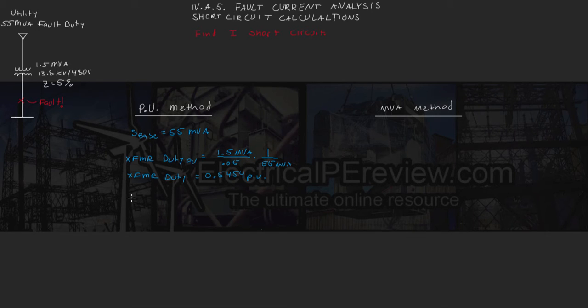Next, our utility duty is going to be equal to 1 per unit. Since we're taking our 55 MVA value and dividing it by the base, we already selected 55 MVA. Next thing we do, we have to add these together.